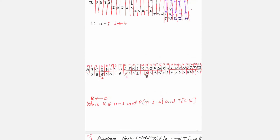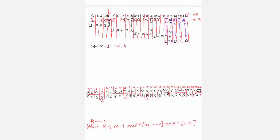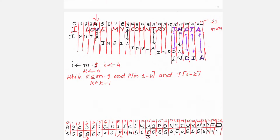The first step inside the outer while loop is to initialize k equal to 0. Next, there is an inner while loop: while k is less than or equal to m minus 1, and p[m-1-k] equals t[i-k]. So k keeps track of how many characters of the pattern have been matched.